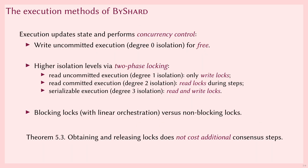The main task of the execution methods is to provide a consistent execution of the transactions — for example, by enforcing serializable execution. Due to the usage of consensus, all shard steps are already executed in a strict sequential order on each shard. Hence, even without further concurrency control, BiShard will already provide read uncommitted execution. Higher isolation levels can be provided via two-phase locking. To provide serializable execution, we first have to lock all the data items that are used by the transaction. If a lock is already in use, the transaction waits until the lock becomes available again. And after obtaining all locks, the transaction can be executed, after which all locks are released. We show in the paper that obtaining locks can be done without additional consensus steps, even when transactions have to wait for in-use locks.